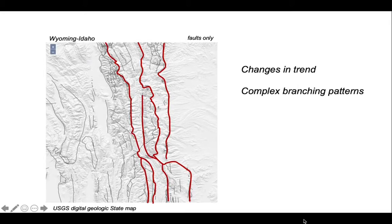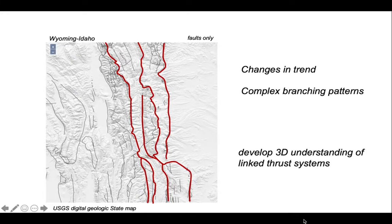But if we add other faults, we can see they form complicated branching patterns. The individual thrusts link together. So there are two separate issues we need to think about if we want to develop 3D understanding of these linked systems.